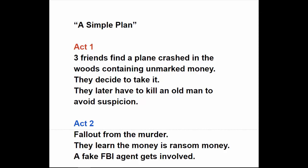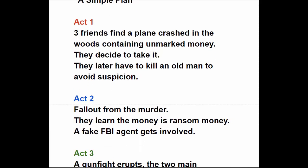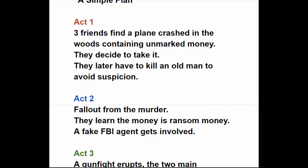A Simple Plan — great book, pretty good movie. Act One: three friends find a crashed plane in the woods containing unmarked money. It takes place in Wisconsin or Minnesota in winter. They're just regular, simple guys, not rich by any means. They don't all agree, but they decide to keep the money. One thing leads to another and they have to kill an old man on a snowmobile who's going to discover them. Now these three ordinary citizens have killed a guy — that's the end of act one.